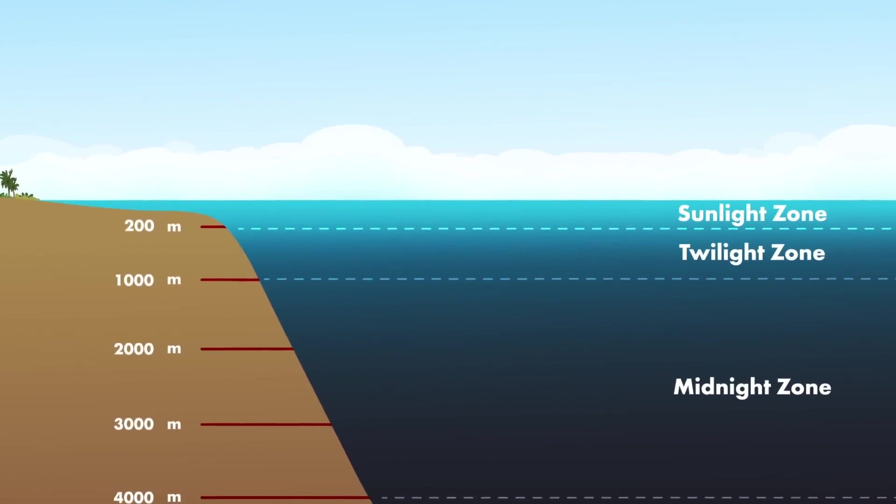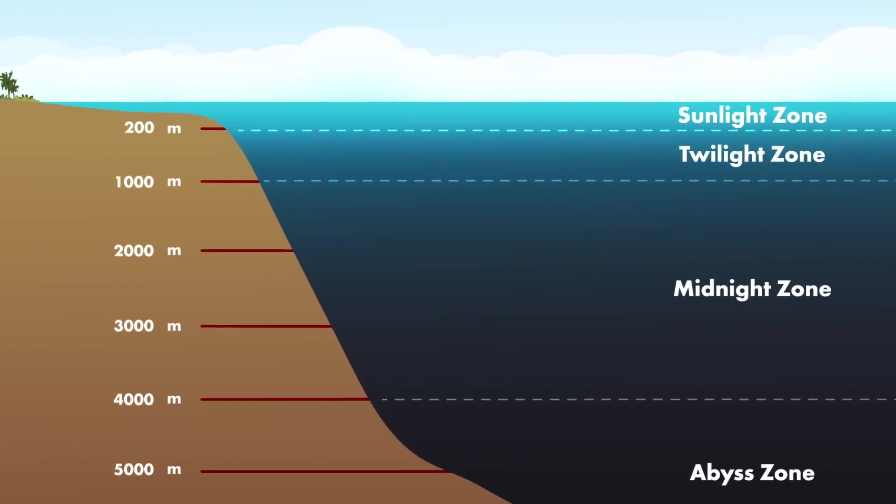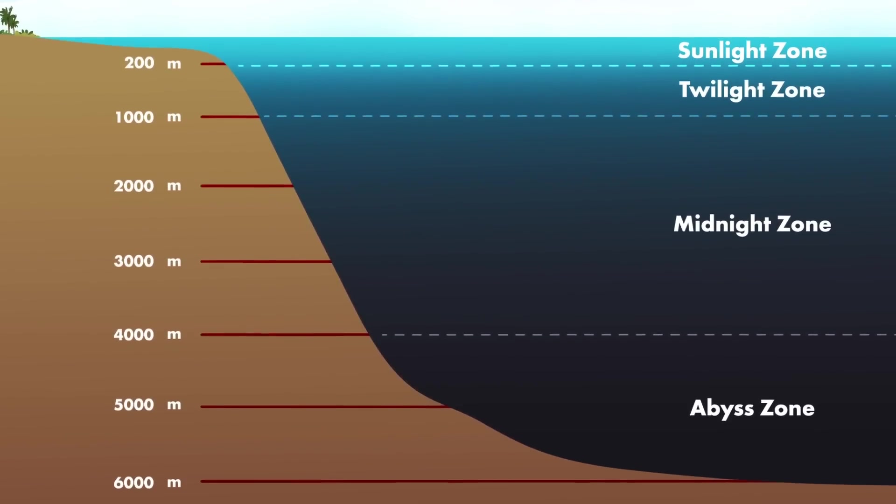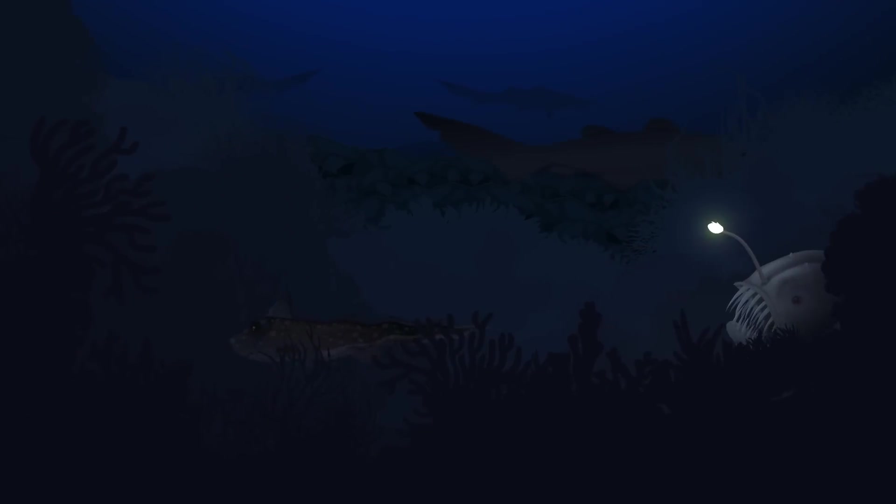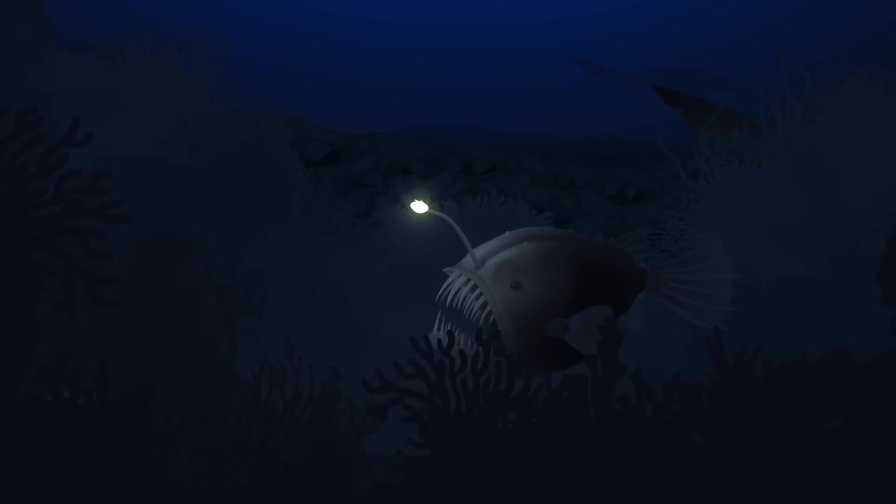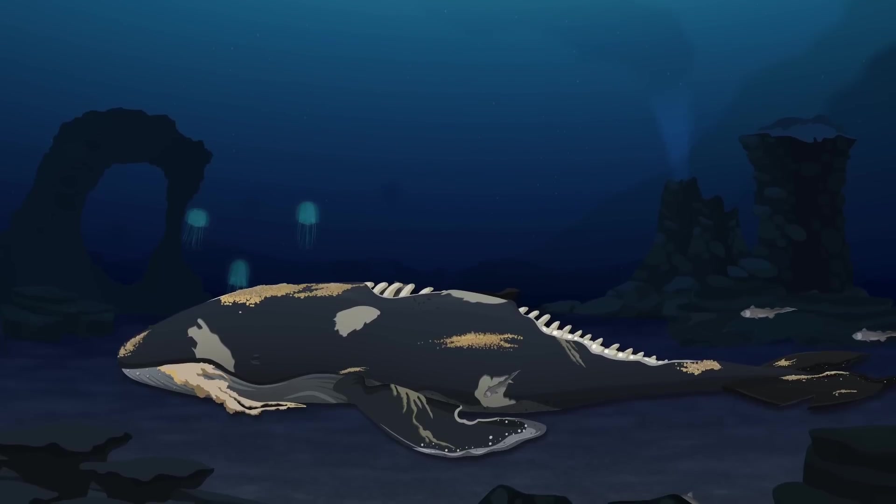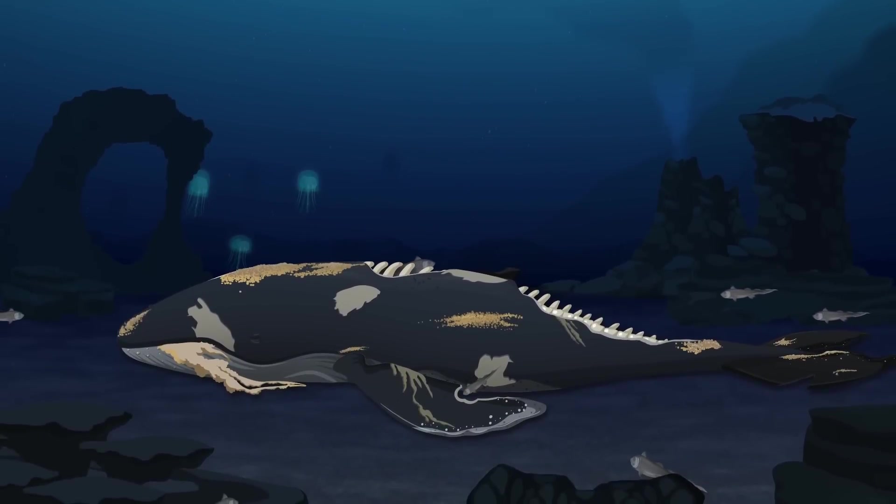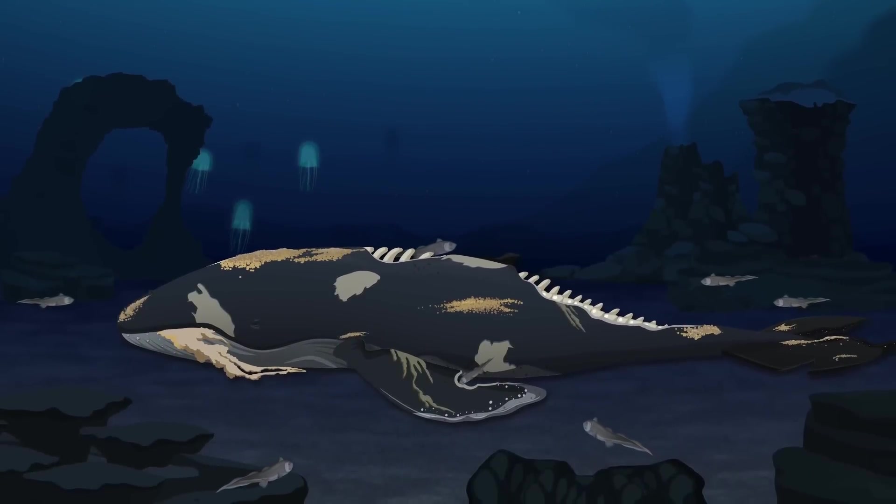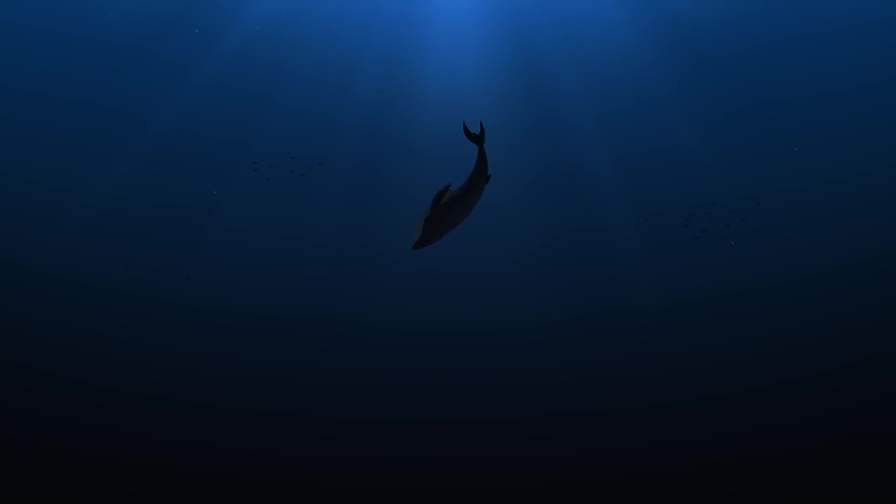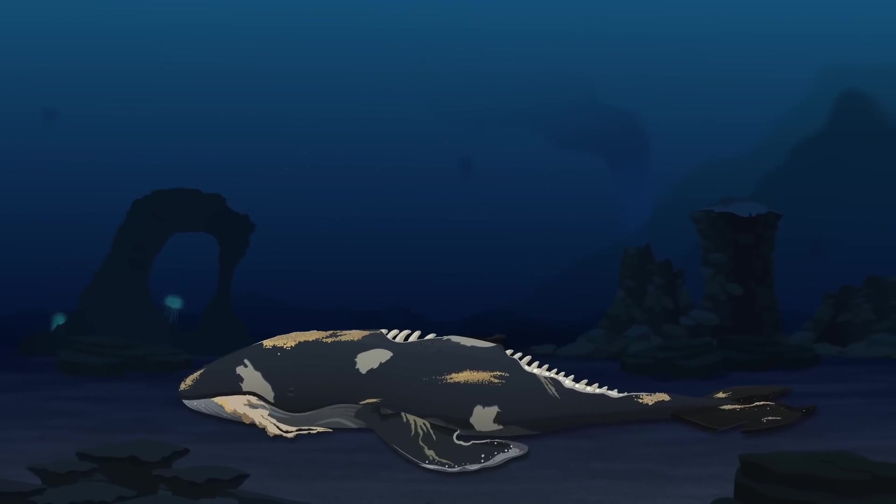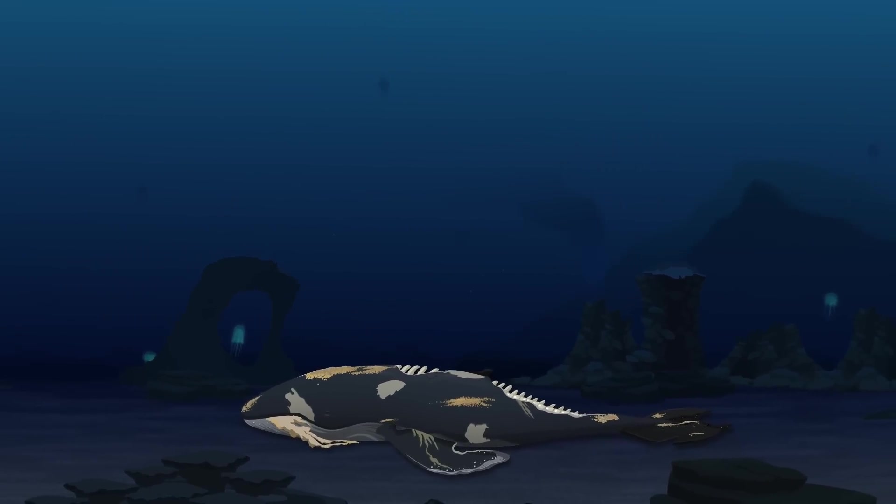Below the midnight zone, we enter the abyssopelagic zone, or the abyss. The abyss is the pitch-black bottom of the ocean, a world of both scarcity and surprising abundance. In this deep-sea zone, rare oases form around the carcasses of large animals, like whales, that come to rest on the ocean floor. When a whale dies in the upper ocean, its massive body sinks into the abyss, where it supports a new ecosystem, known as a whale fall.